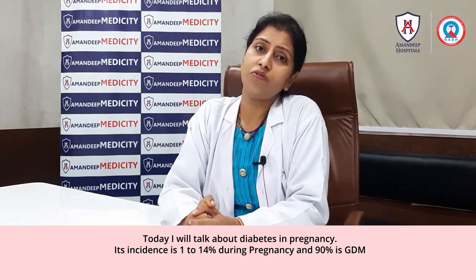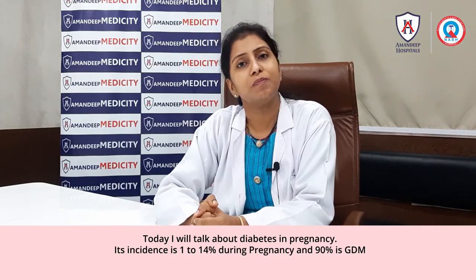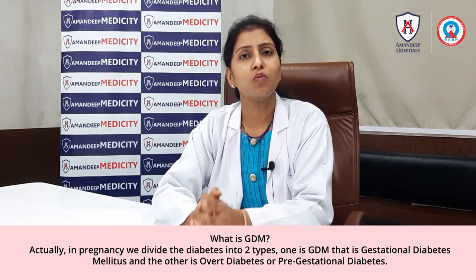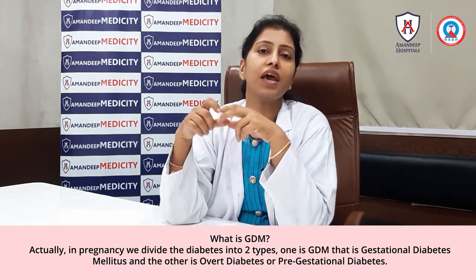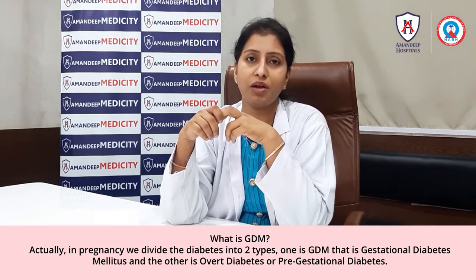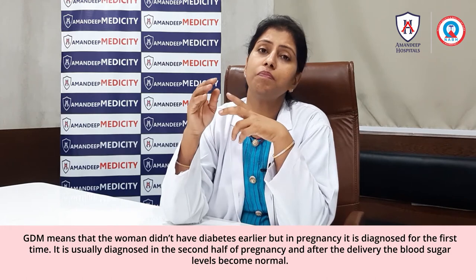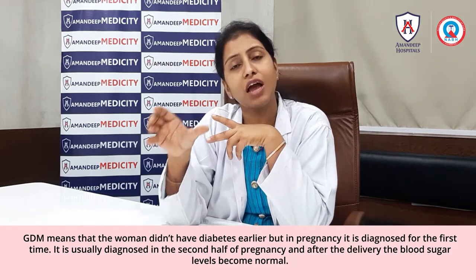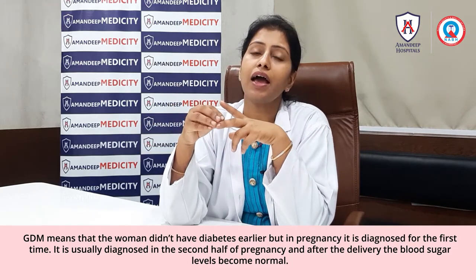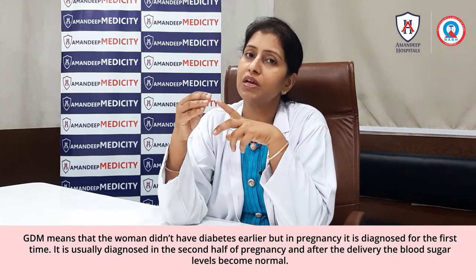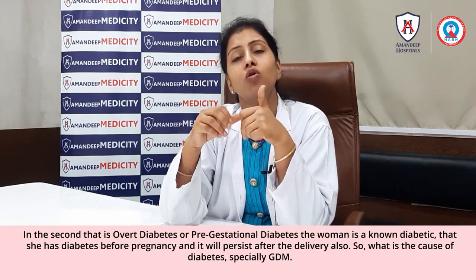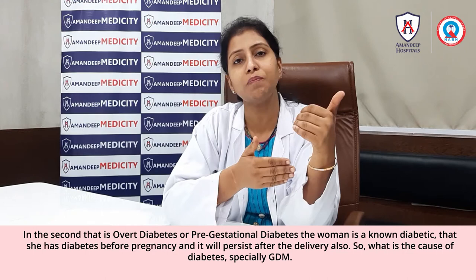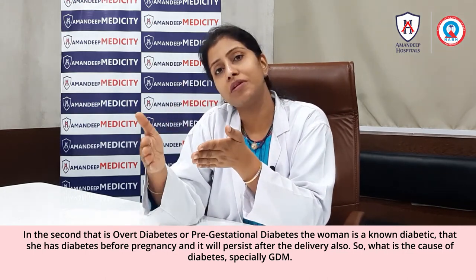Its incidence is 1–14% during pregnancy and 90% is GDM. In pregnancy we divide diabetes into two types: one is GDM, that is gestational diabetes mellitus, and the other is overt diabetes or pre-gestational diabetes. GDM means the lady did not have diabetes before and it is first diagnosed during pregnancy, usually in the second half. After delivery, blood sugar levels become normal. In overt or pre-gestational diabetes, the lady already has diabetes and after delivery the diabetes still persists.